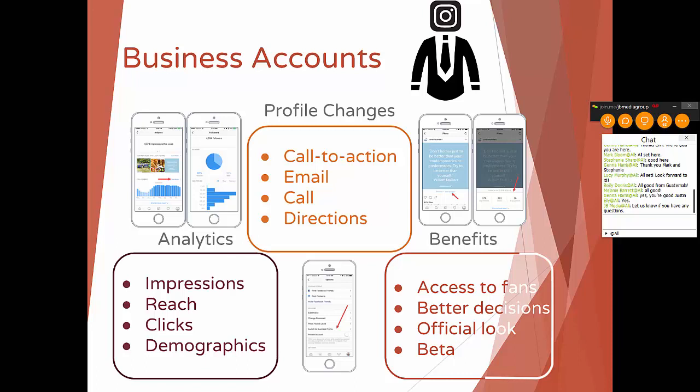Analytics — this is probably the biggest thing. You have onboard analytics, first-party platform analytics right there in your app. You can see how many people your posts are reaching, which is something you couldn't see before, and it's absolutely huge. You can see number of impressions — how many people actually ended up seeing what you had. You can see the number of clicks to each of the profile changes: the call to action, the link in the profile, email, the call, et cetera. And then you can see demographics, which includes age ranges to help you advertise better.